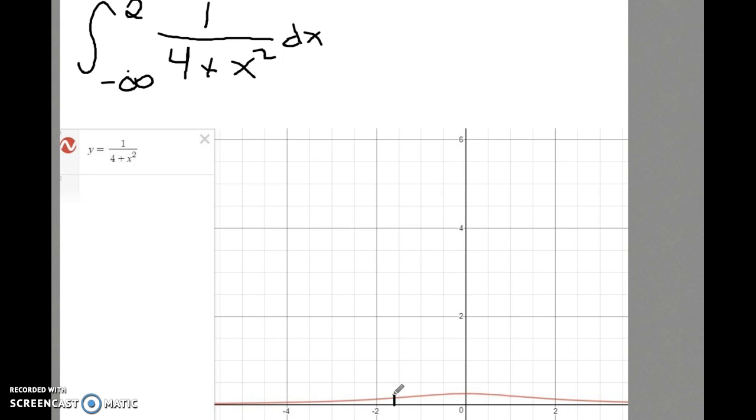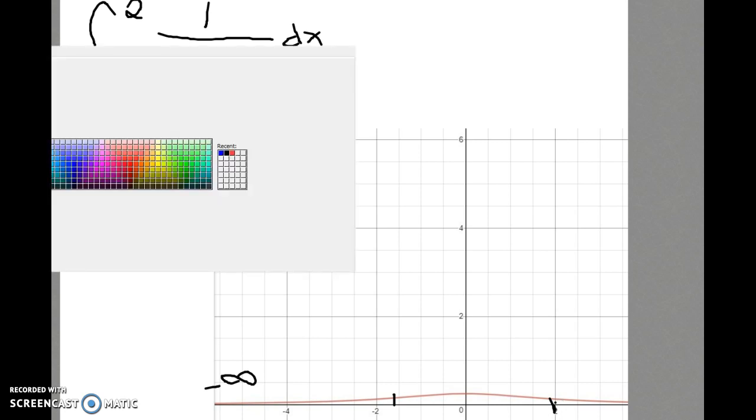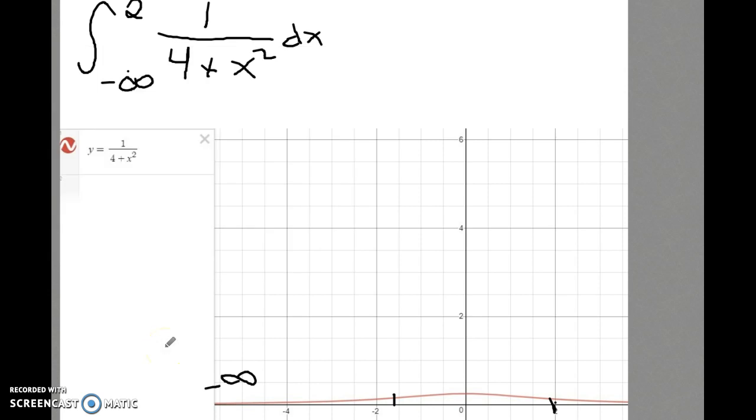I've graphed the function 1 over 4 plus x squared in Desmos. We could think about this in terms of area. We're trying to integrate from negative infinity to 2, so we're looking at the area under the curve going from 2 back towards negative infinity. It's an unbounded region.